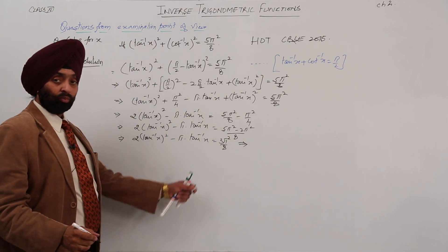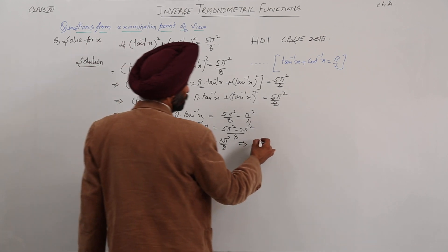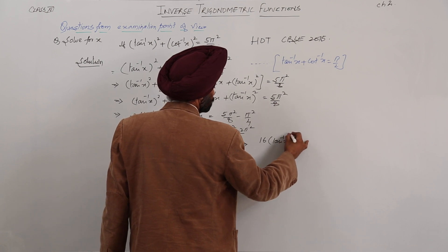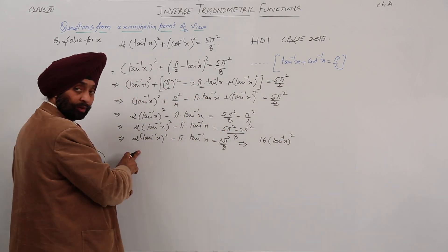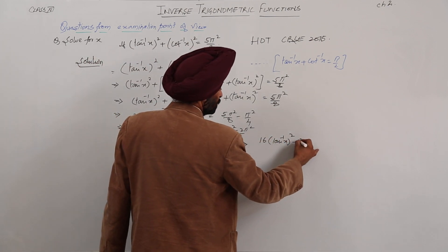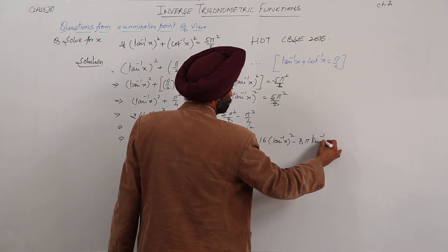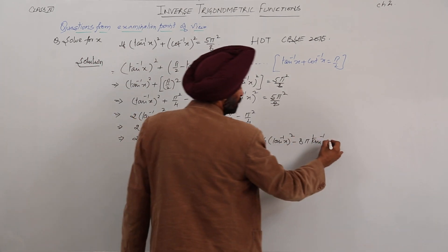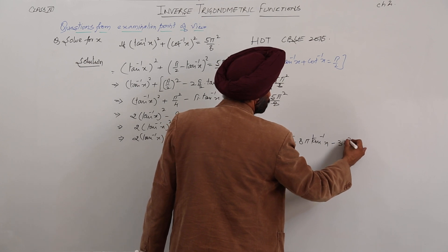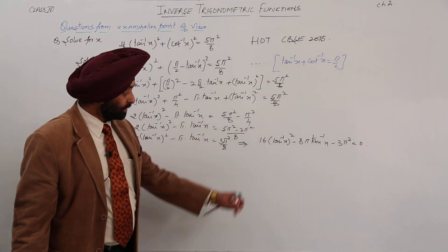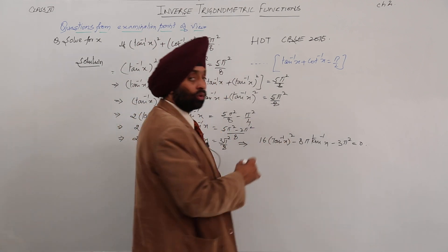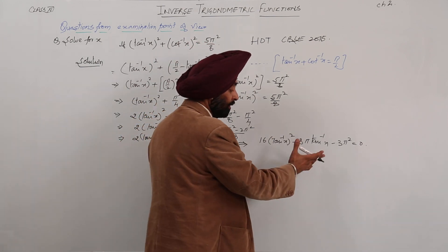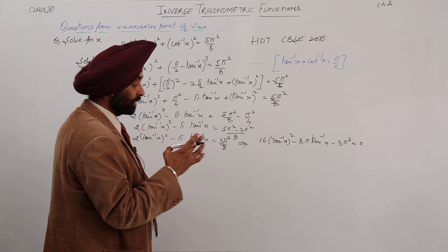Now multiplying 8 to both sides, we are getting 16 tan inverse x whole square — 8 multiplied by 2 — minus 8 pi tan inverse x, and this term comes to this side: minus 3 pi square equals 0. This becomes a quadratic equation. So now you can either make factors or proceed with the quadratic formula.